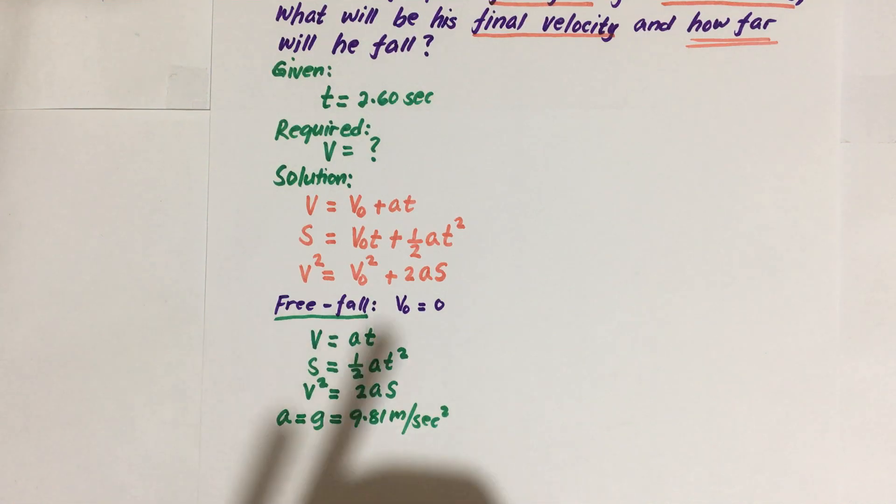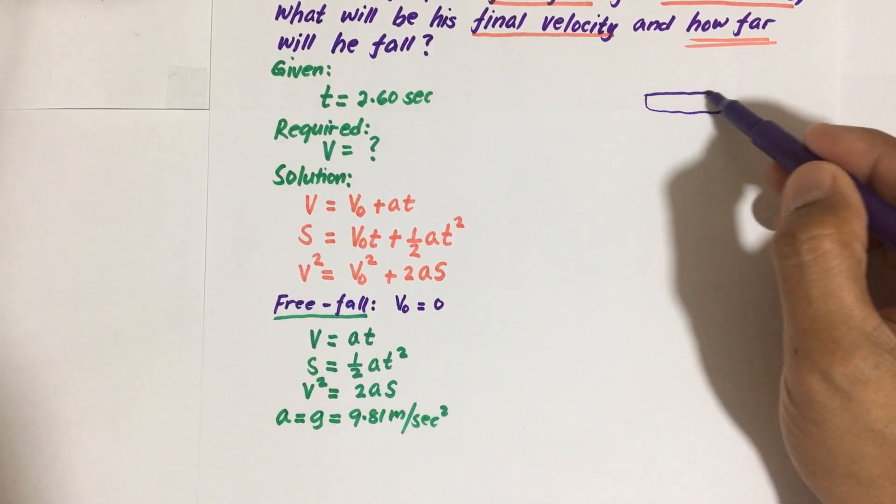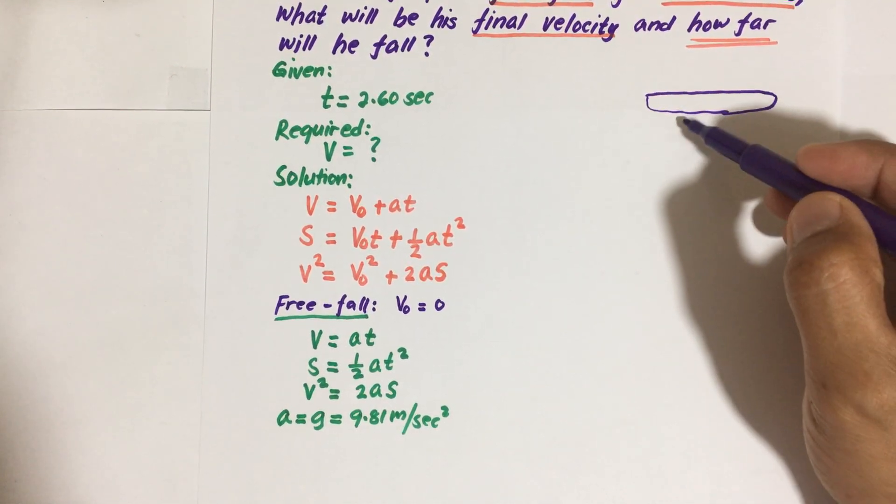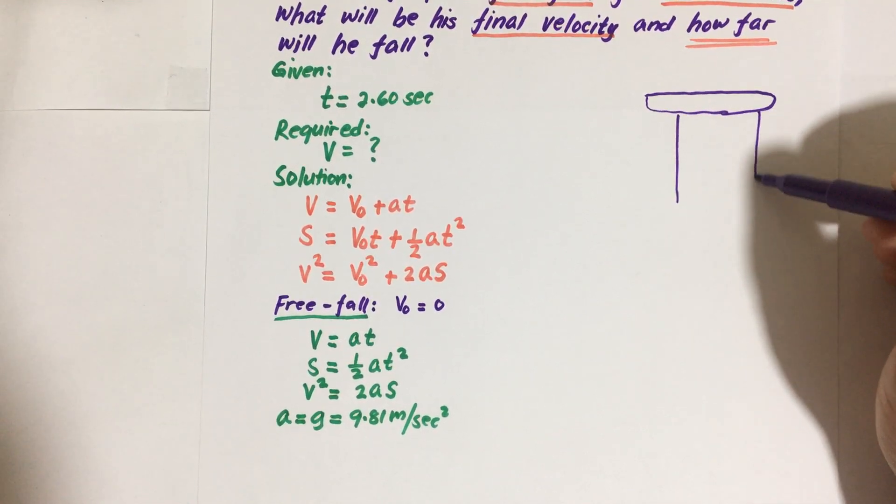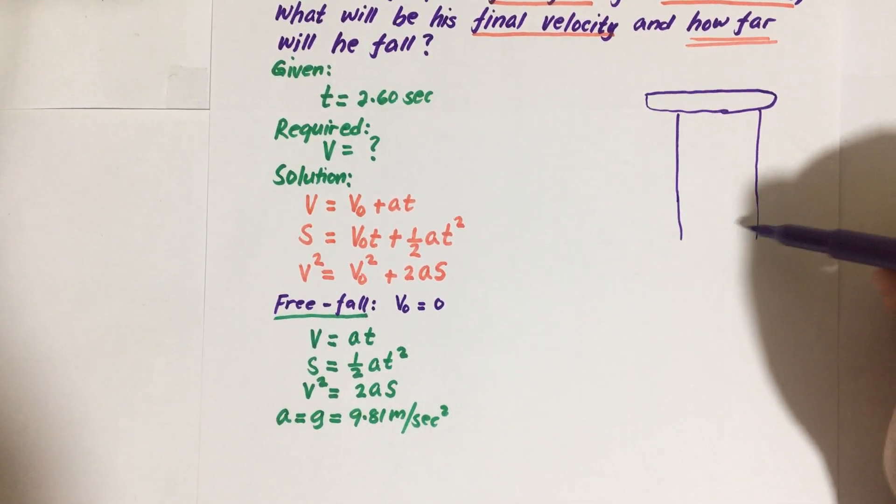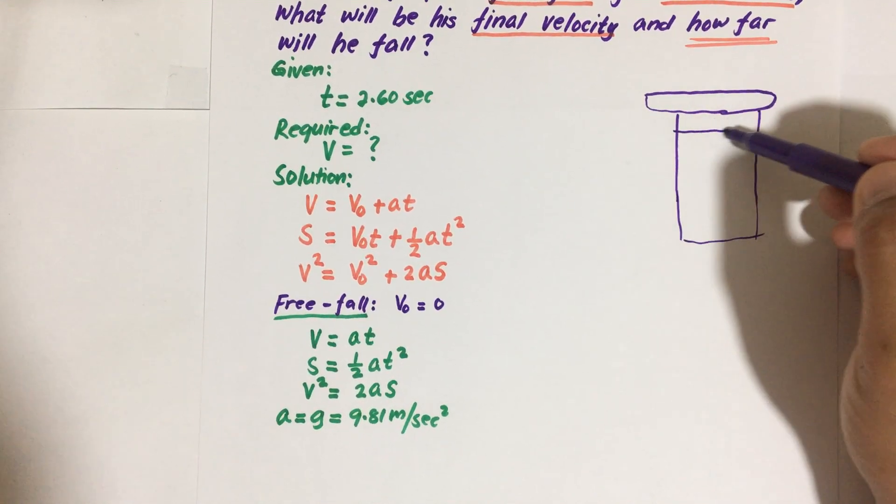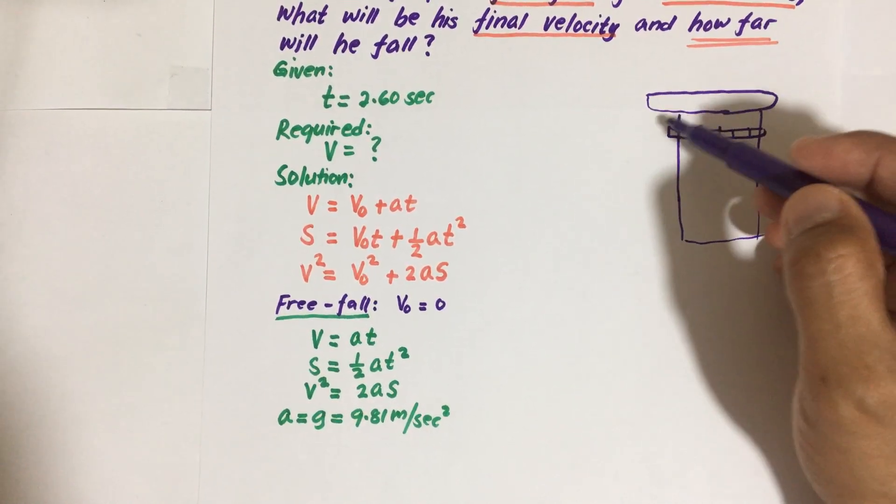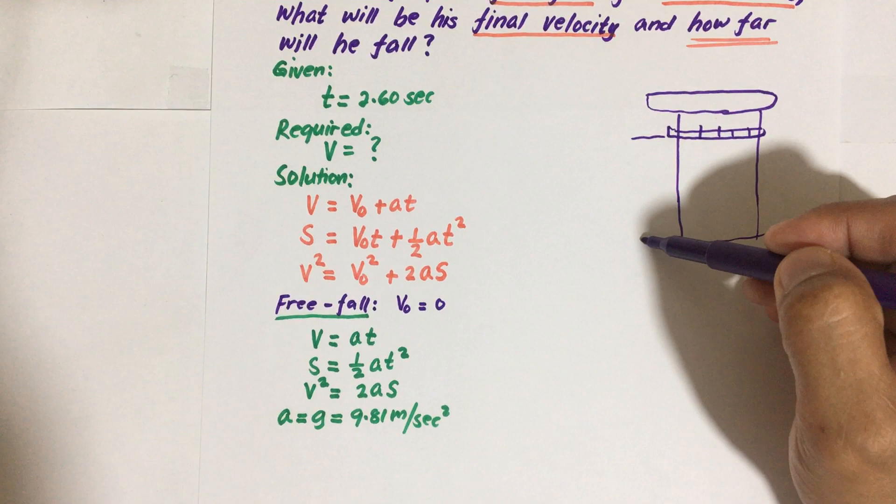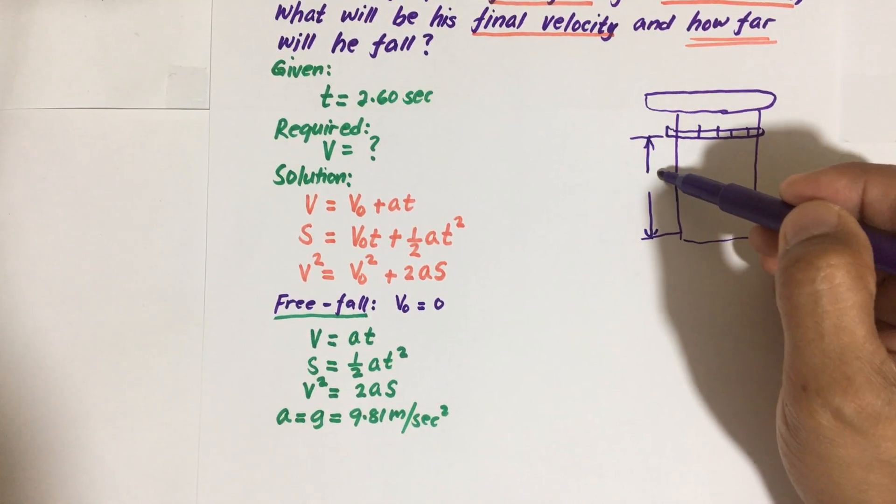Now we can solve for the displacement. For example, this is the free fall, the Giant Drop. So this is our Giant Drop. People are sitting here, and so this is our displacement S.